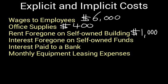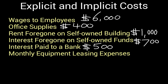Fourth, interest foregone on self-owned funds — the business person has invested $100,000 of their own money into the business, which could have earned $700 each month in the bank. Fifth, there is a loan the business has taken out, and interest payments to the bank are $500 per month. Finally, monthly equipment leasing expenses — machines leased at a cost of $800 per month.